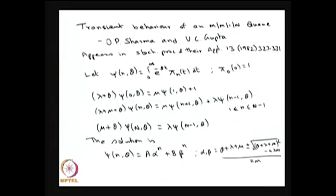Here I am going to explain how to get the transient behavior of M/M/1/N/Q in a very simple form. Even though there are many literatures for the finite birth-death process, I am explaining the overview of this method by O.P. Sharma and U.C. Gupta, which appears in Stochastic Processes and Their Applications, volume 13, 1982.